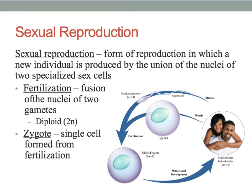Sexual reproduction is a form of reproduction in which a new individual is produced by the union of the nuclei of two specialized sex cells. Remember that these specialized sex cells are called gametes. Fertilization is the fusion of the nuclei of two gametes.